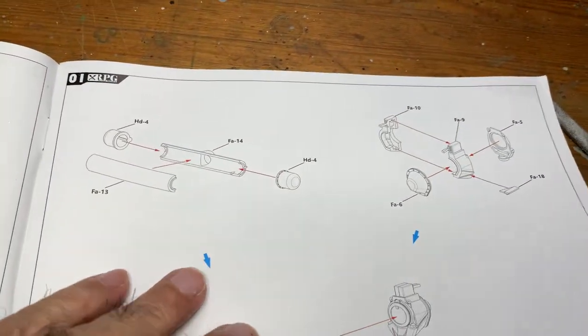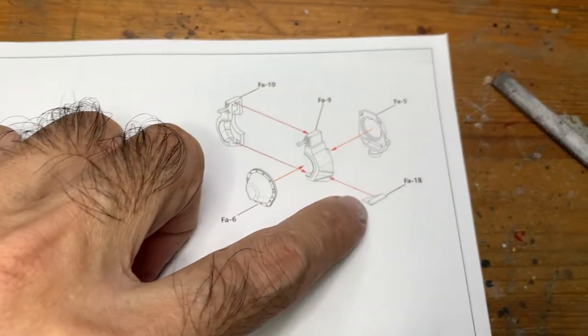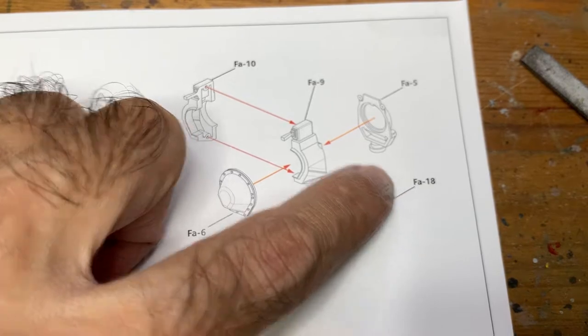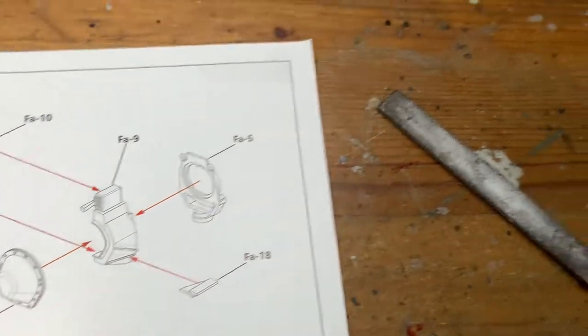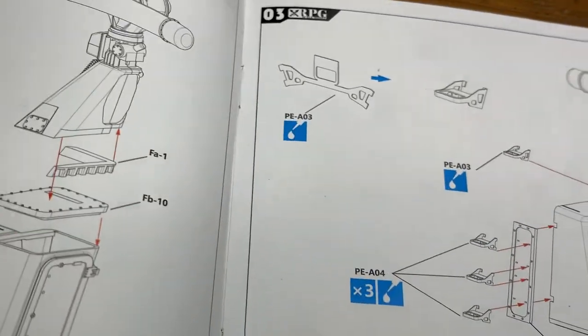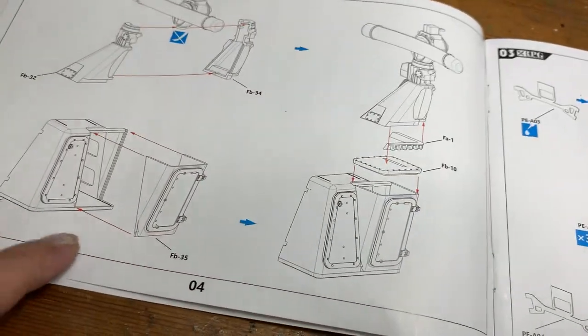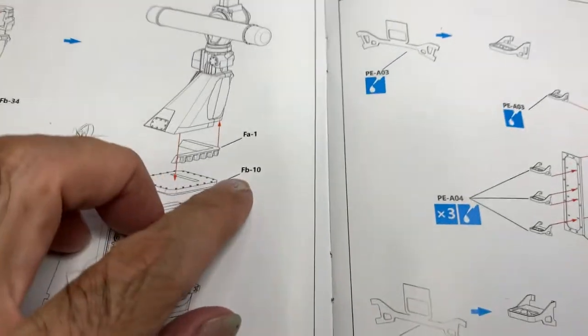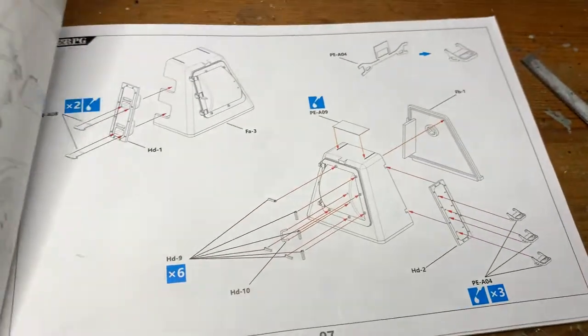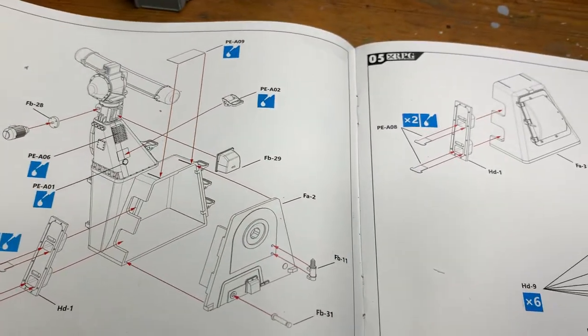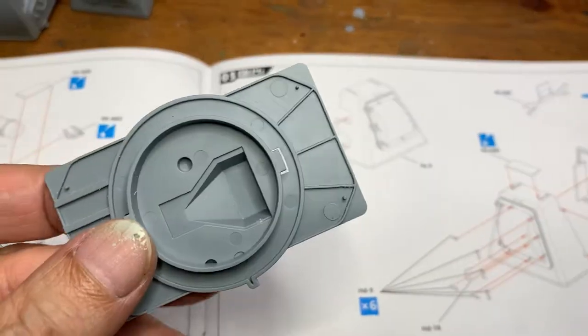It's quite a quick build. A few points to note - for example, like this part here, the labeling is wrong. It is not this number here. You will find that this piece, this number, will be a different piece. But since this kit doesn't have too many parts, it won't be difficult to find the actual parts. There are a few other parts with wrong labeling, but those things you can find easily.